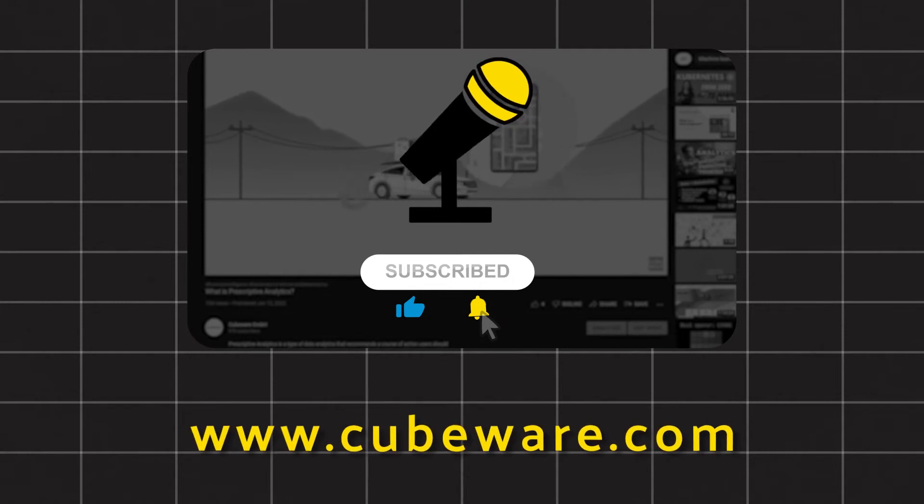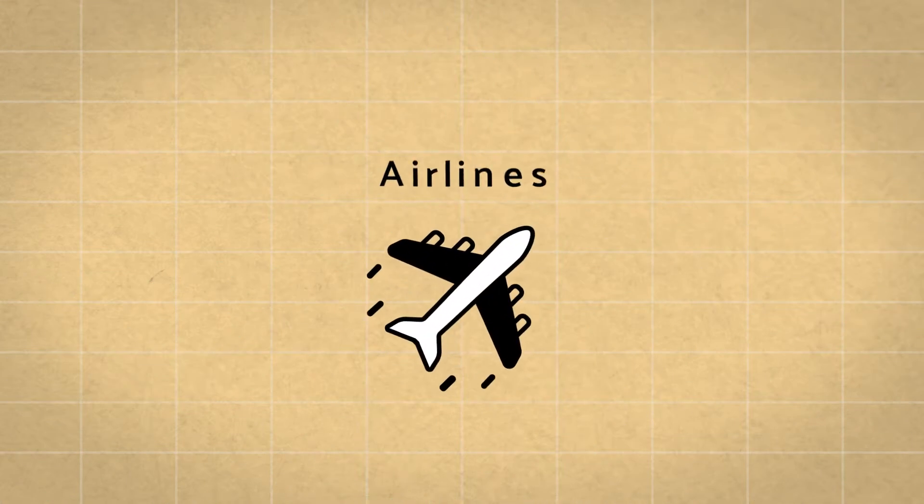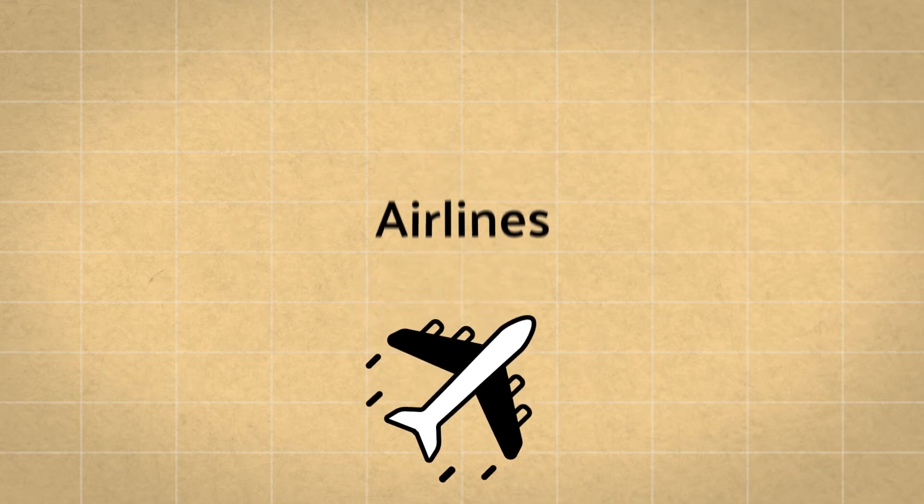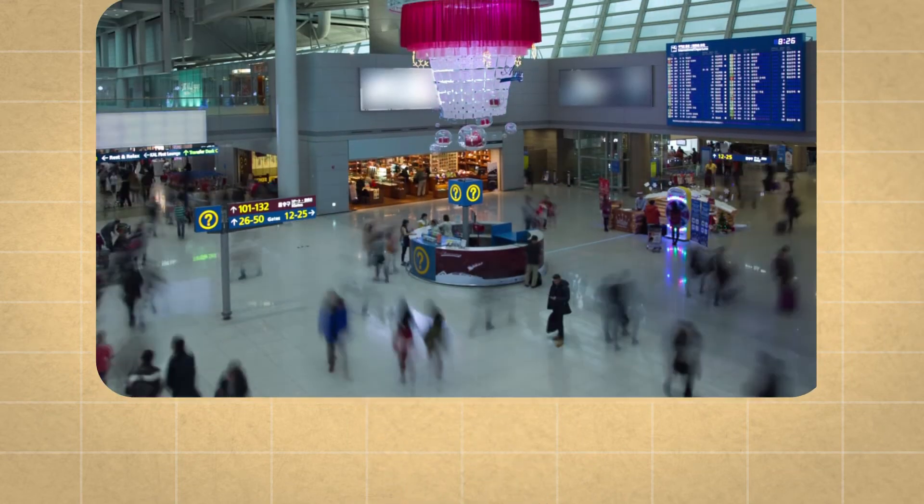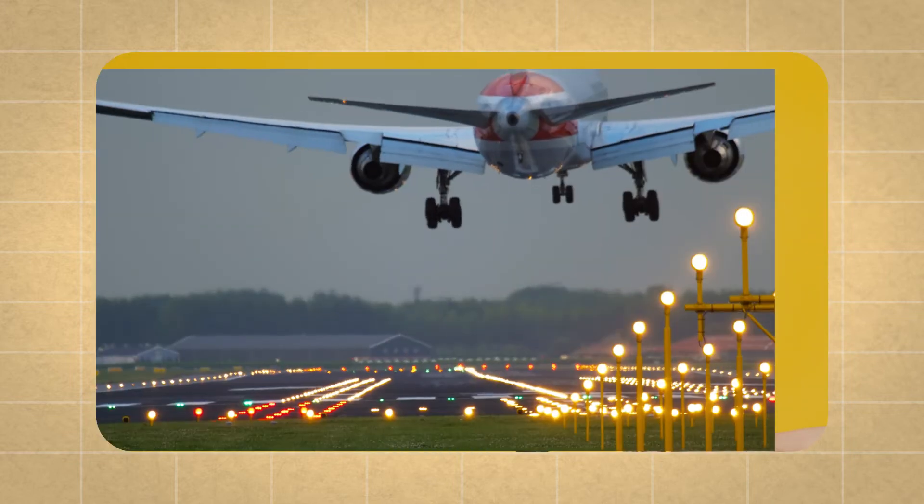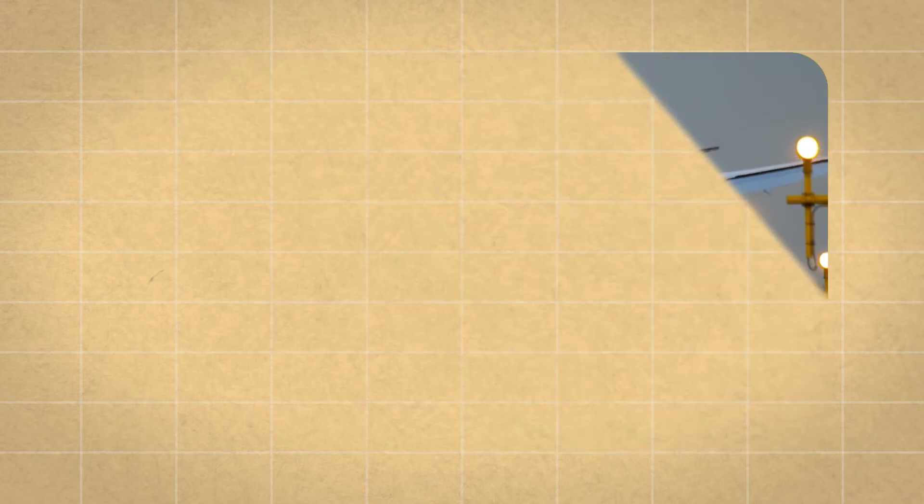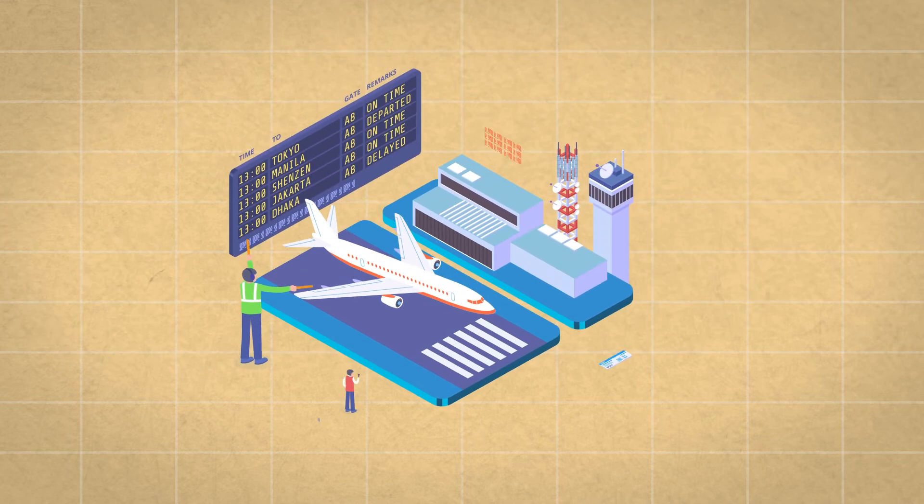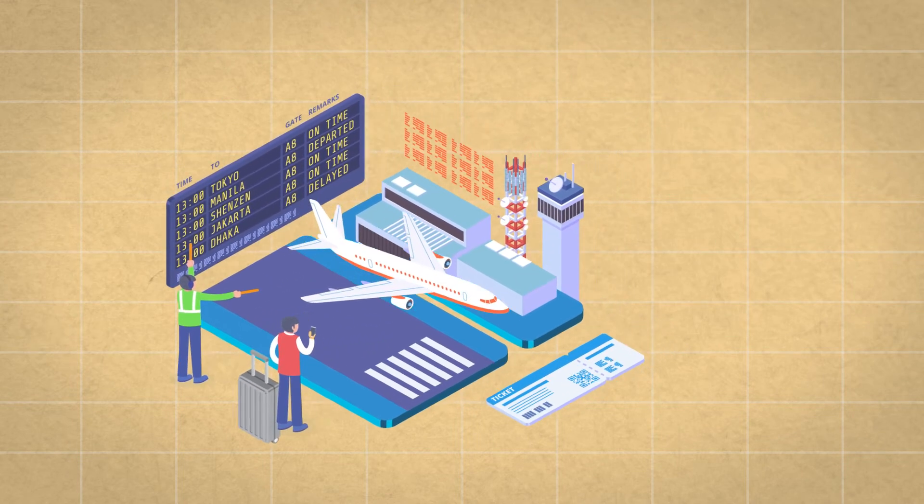Now let's move on. Airlines: Prescriptive analytics can help to increase airline bookings by adjusting variables like ticket prices, frequency of flights, and promotional rates. For example, if the company aims to achieve a 90% sale of tickets booked during Christmas.